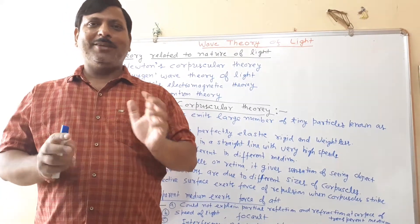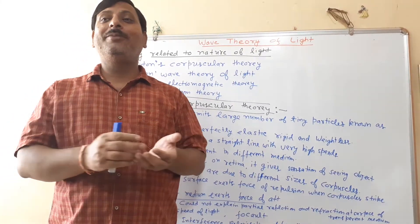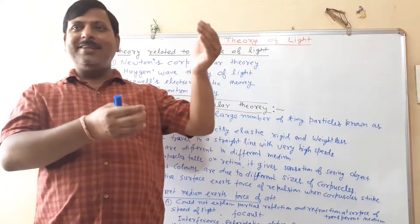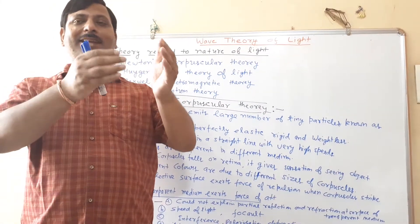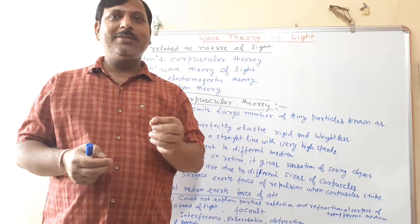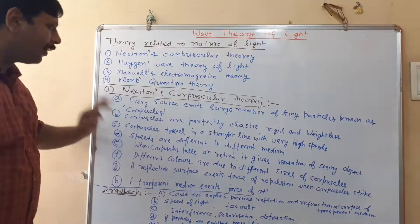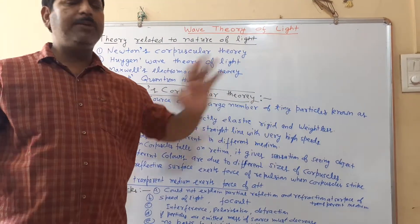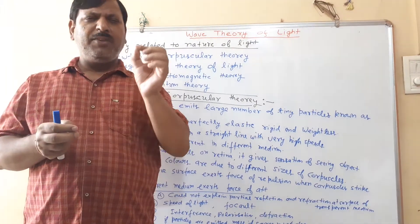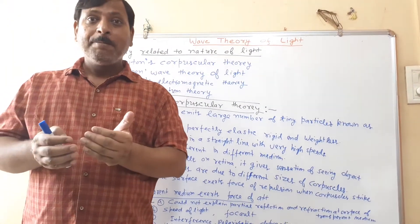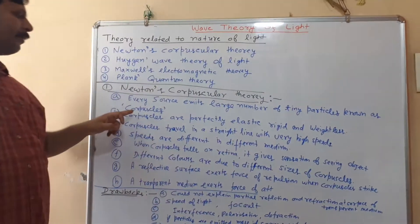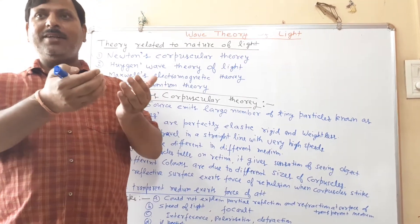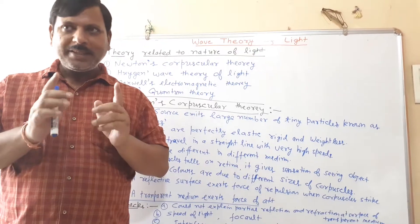There are two types of objects: luminous objects and non-luminous objects. Light is emitted from luminous objects. The first point of Newton's corpuscular theory is that a large number of very small tiny particles are emitted from the source. These particles have a special name: corpuscles.